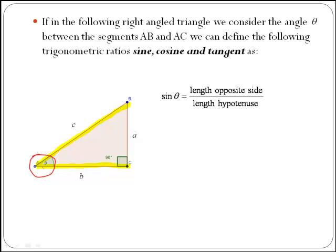In this case, the opposite side is side A. The hypotenuse, remember, is the side opposite the right angle, therefore in this case it is C. So sine of theta is A over C.